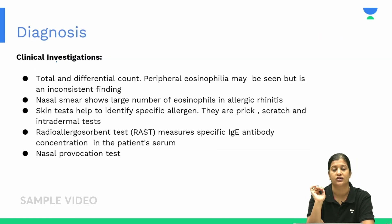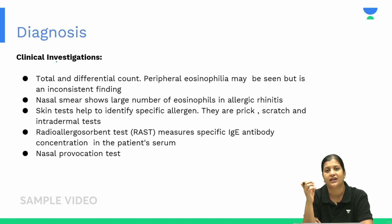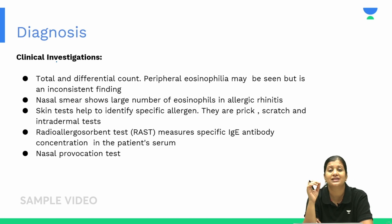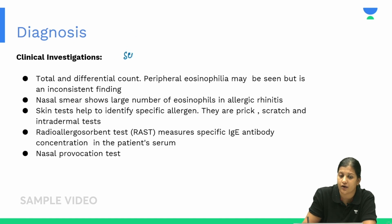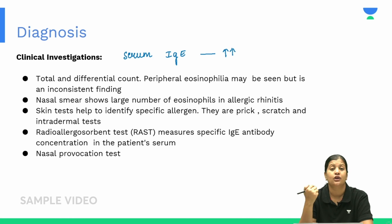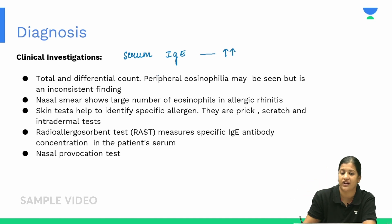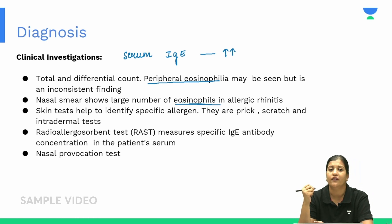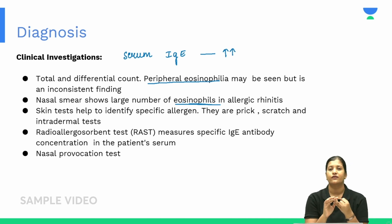To evaluate a patient with allergy, since it is an IgE-mediated disease, serum IgE levels are measured first. Elevated serum IgE is evidence of allergy. Eosinophil count also increases in allergy, so peripheral eosinophilia or nasal smear showing eosinophils would suggest allergy.